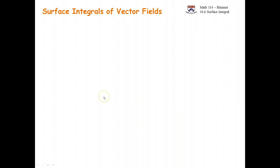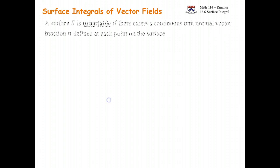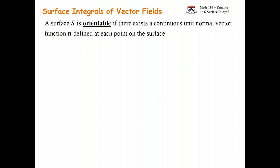Now we want to look at surface integrals of vector fields. This will lead us into the Stokes and divergence theorems. First off, we have to talk about surfaces and their orientation. A surface S is orientable if there exists a continuous unit normal vector function, called n, defined at each point on the surface.